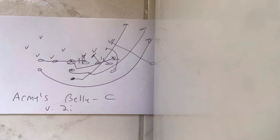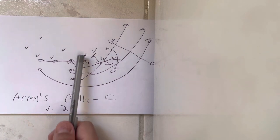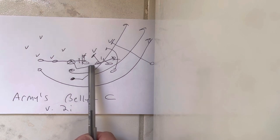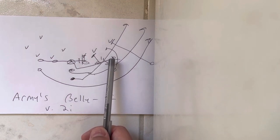Basically if there was a 2i, the guard blocks out of the 2i. The center will successfully snap the ball and then open up at 90 degrees and trap number 2, get his helmet to the left, right for him, through him, trap him and drive him out of bounds.